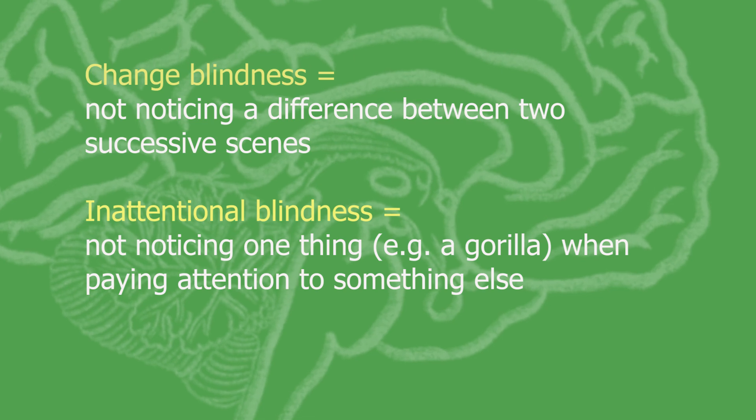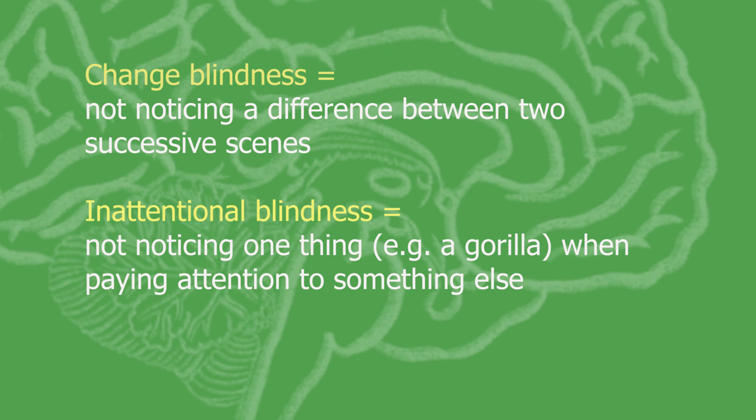Although we call these things change blindness and inattentional blindness, they're not really blindness — this is not a problem with our visual system. It's rather a limited capacity of our attention system that is selecting one piece of information above another. It's focusing on the basketball players to such an extent that you're almost blind — you can't notice or report the presence of the gorilla.